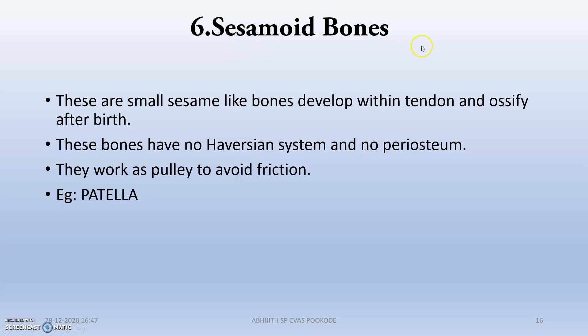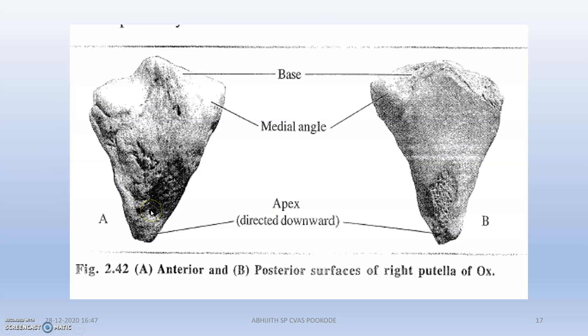Next are sesamoid bones. These are sesame-like bones that develop within a tendon and ossify after birth. They do not have a Haversian system or periosteum. They function as a pulley to avoid friction. The classic example is the patella — you can see the patella here.